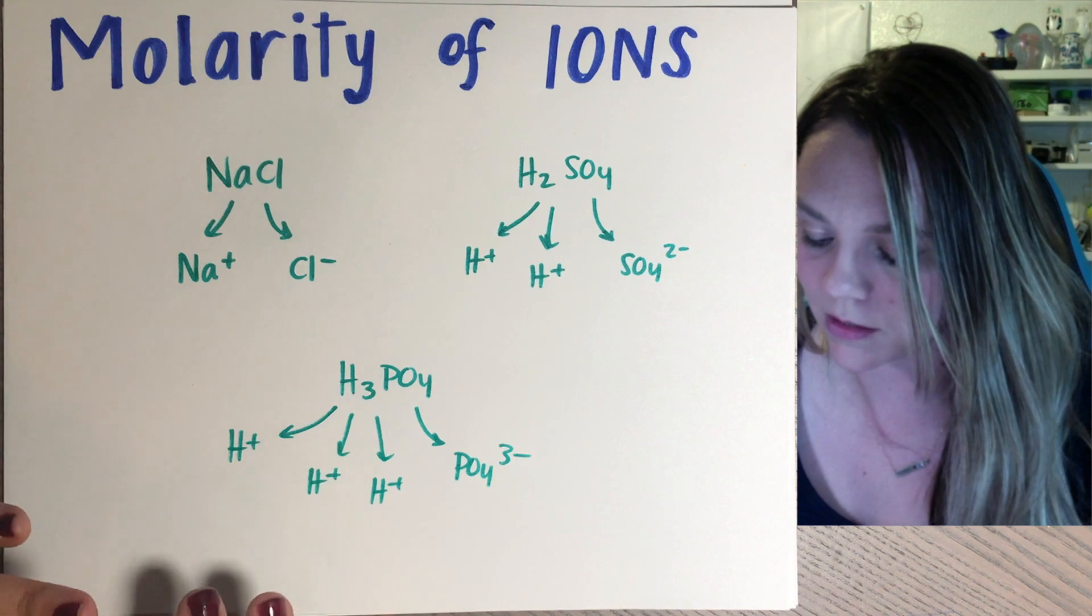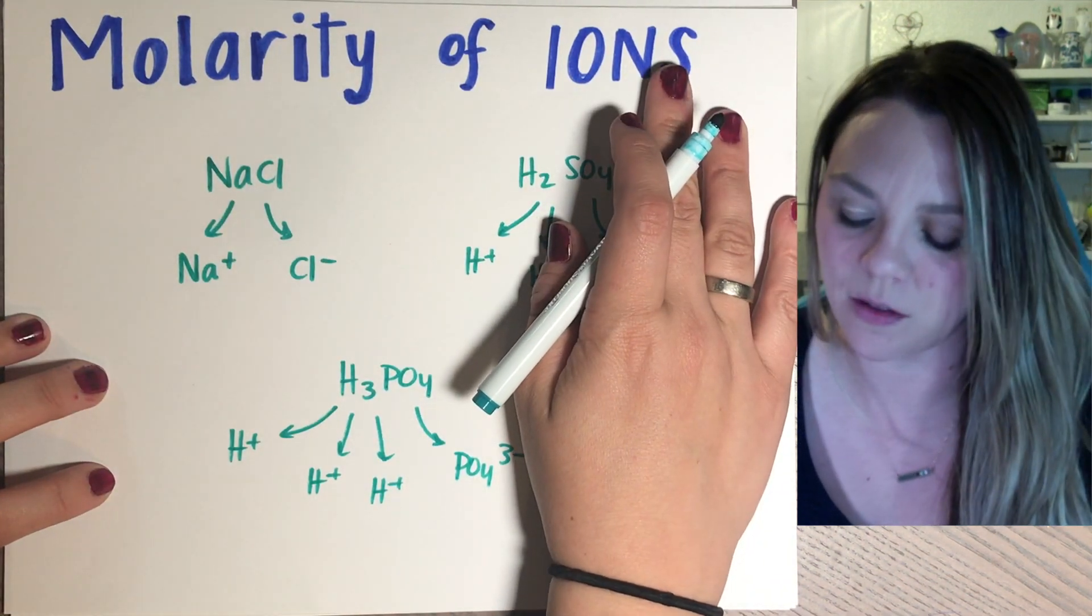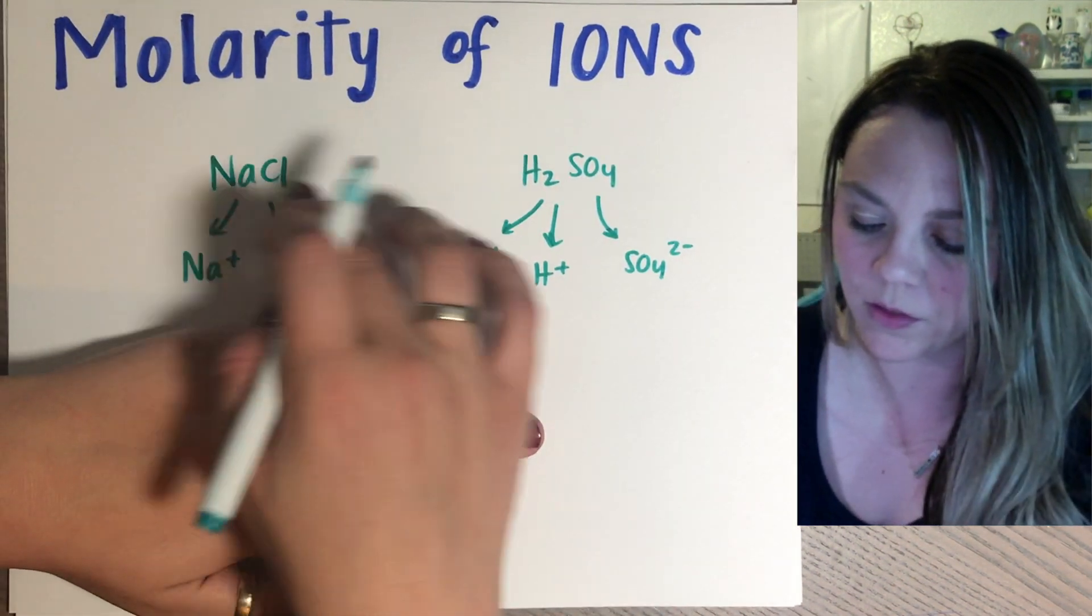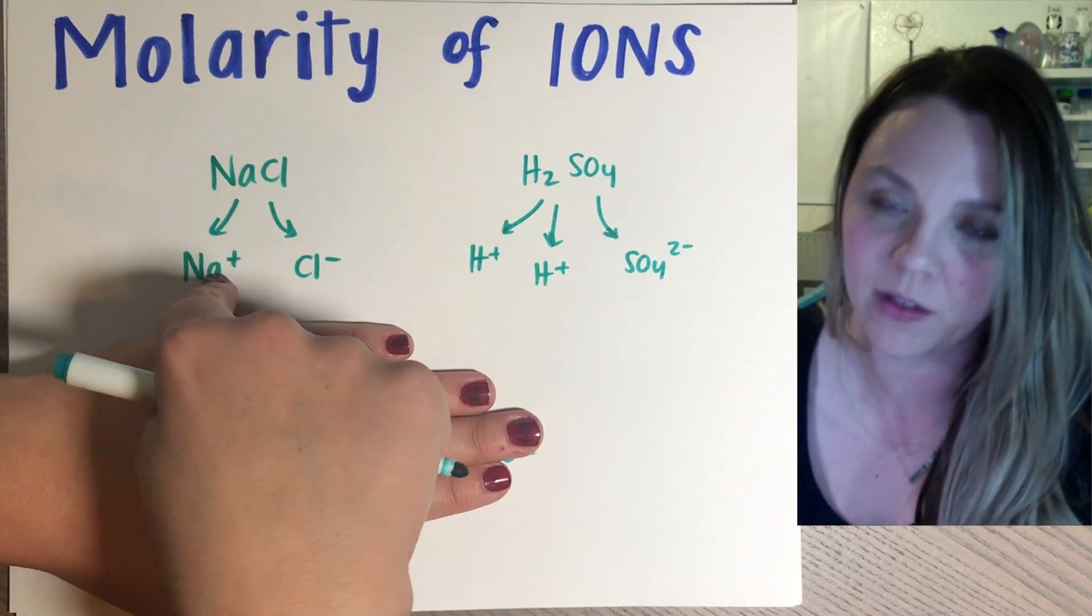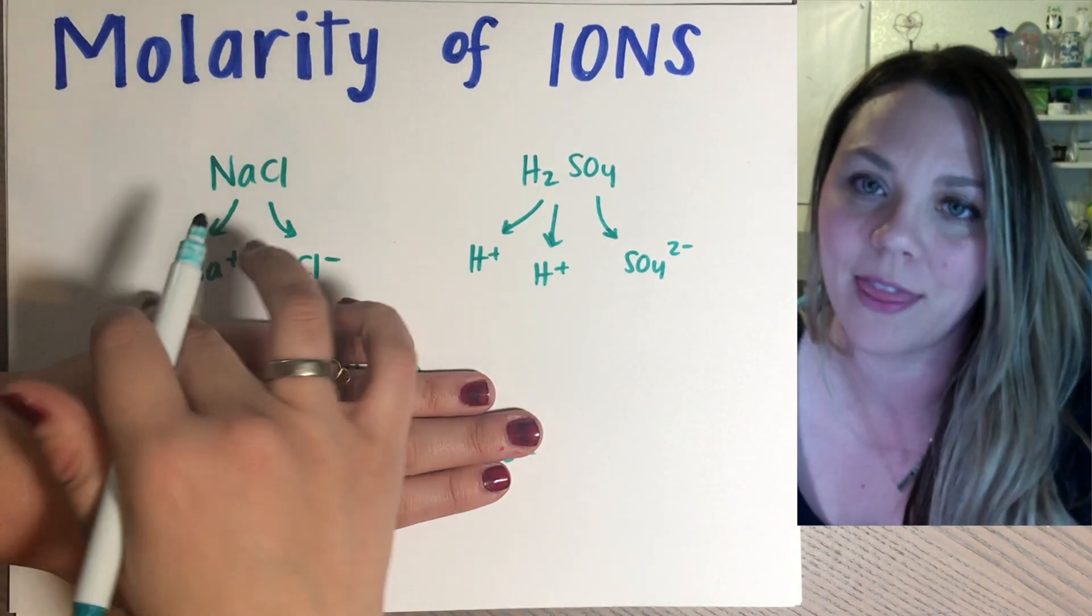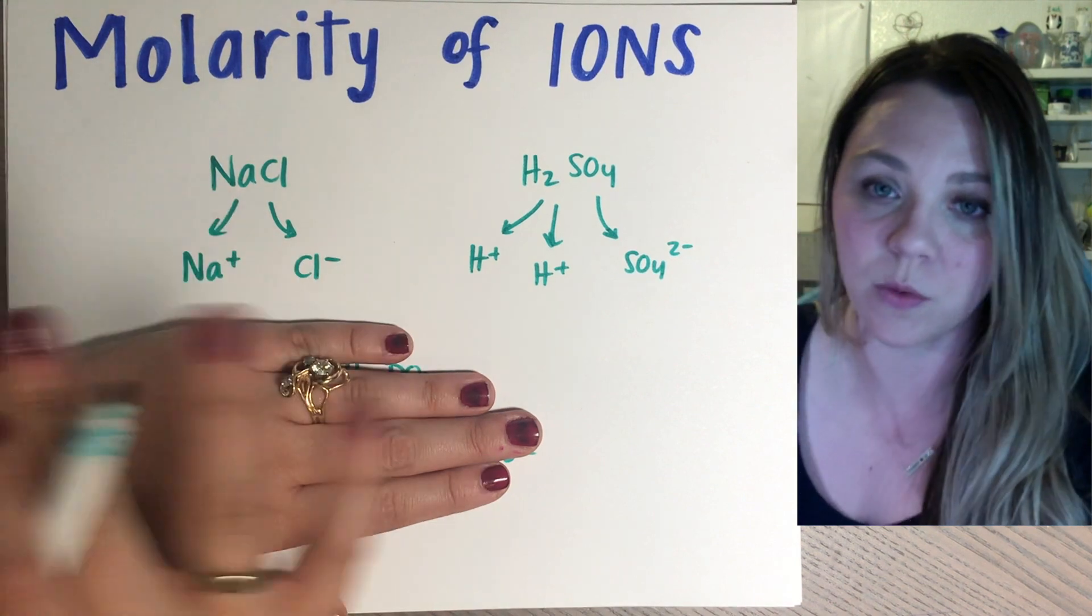And that's really what these types of questions are asking you. So if you knew the molarity of sodium chloride, and it was asking you to find the molarity of just the sodium ions, that's real easy because it's just a one-to-one.